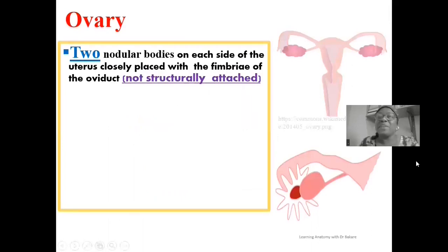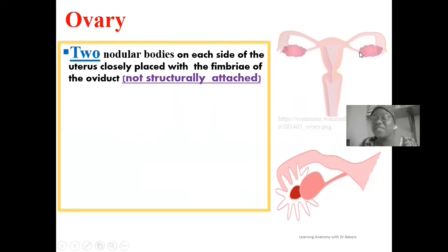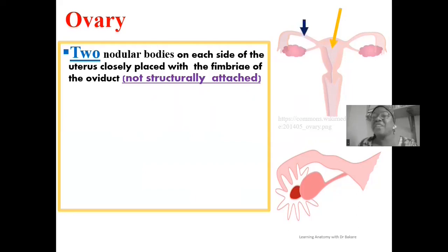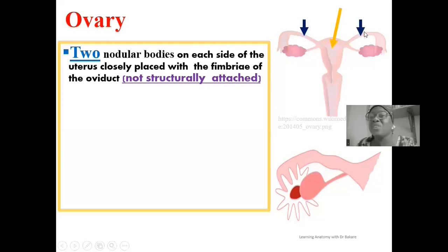The ovary is the female reproductive organ. We have two ovaries, and these are nodular structures or bodies situated on each side of the uterus. This is the configuration of the female reproductive system — the uterus is arrowed in yellow. We have tubular extensions from the uterus that run laterally, referred to as the oviduct or uterine tube, also called the fallopian tube. We have one on each side, arrowed here in blue.